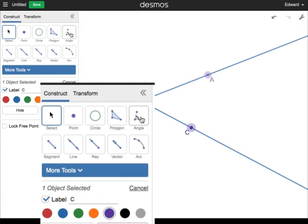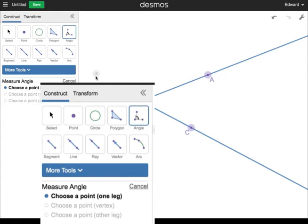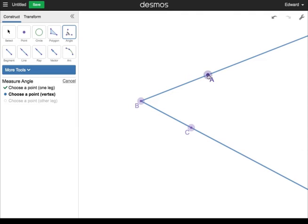To measure the angle, click on the Angle tool. Then click on the points ABC in that order. You'll see the angle measure appear.